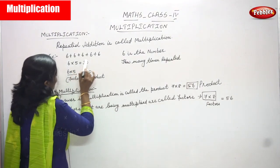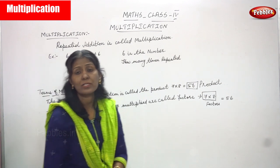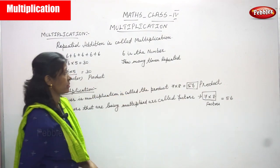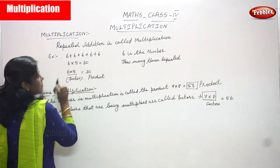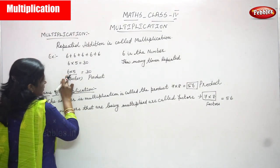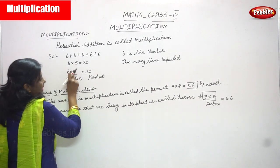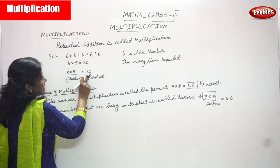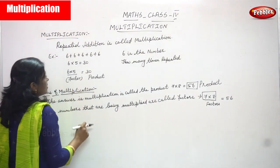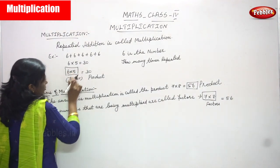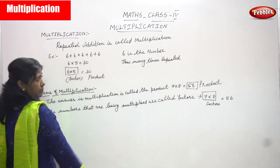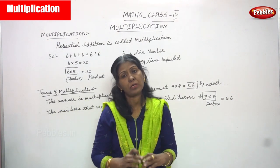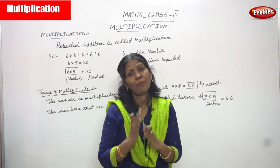So, 6 into 5 is equal to 30. 6 is the number and how many times is it repeated? 5 times repeated. So 6 into 5 — 6 is a number and how many times it's repeated — 5 times. So the answer is 6 into 5 equals 30.